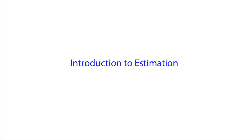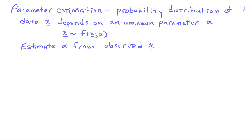In estimation, we're trying to infer some meaningful parameter or quantity from the data that we measure. For example, we might want to measure the distance to an aircraft from a radar return. We talk about parameter estimation. The model we're using is that the data X — assuming multiple samples — depends on some unknown parameter alpha, described by a probability distribution F of X and alpha. Our goal is to observe data X and estimate alpha.